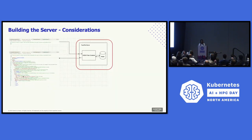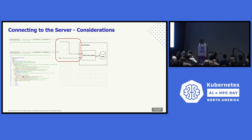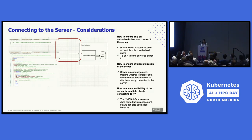The first step was to build the server itself, which is what FarPilot provides. Some of the considerations I thought about were how and where to host this server, and the hardware and OS requirements once I decide where to host it. And then to connect to this server, I thought about how to ensure only an authorized client can connect, how to ensure efficient utilization of the server, and how to ensure availability for multiple clients.